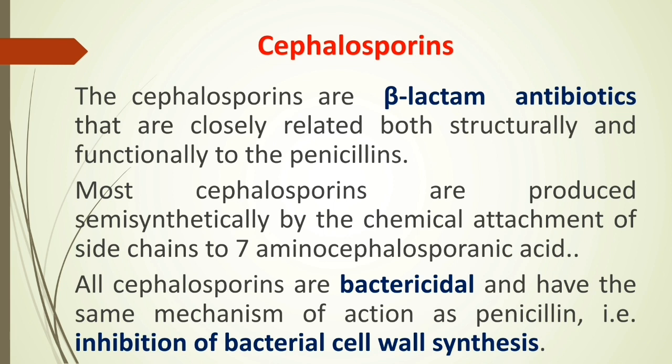Like penicillin, cephalosporin is also a bactericidal agent. An easy mnemonic: penicillin contains the letter 'C' and bactericidal also contains 'C', so that helps you remember that penicillin is bactericidal. Most beta-lactam group members are bactericidal in nature — for example, penicillin, cephalosporin, monobactam, and carbapenem — along with some aminoglycosides and fluoroquinolones.